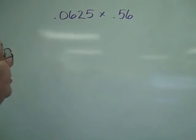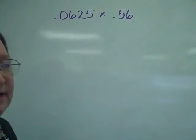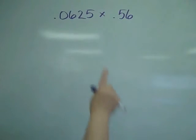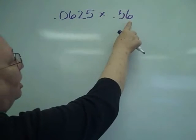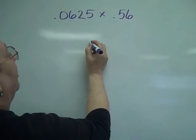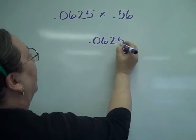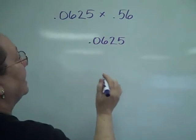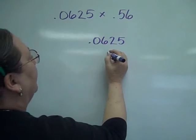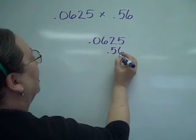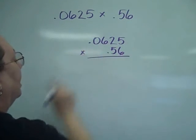Well, looking at these numbers, they can be a little bit intimidating, but remember, we're going to line up the numbers on the right. So I'm going to have 0.0625, which is 625 ten-thousandths, times my 56 hundredths.